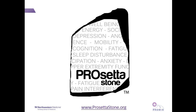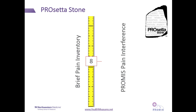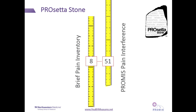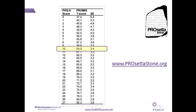Prosetta Stone was an NIH grant that utilized three different linking methods to create tables transforming a score on one measure, like the Brief Pain Inventory, to the PROMIS metric, here pain interference. To use a Prosetta Stone table,